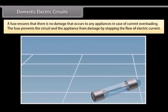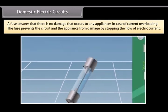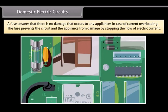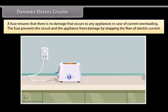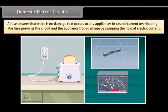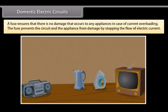A fuse is an important part of all circuits. It ensures that there is no damage that occurs to any appliances in case of current overloading. Overloading occurs when the live wire and the neutral wire come in contact with each other or there is a rise in the supply voltage. In this case, the fuse prevents the circuit and the appliance from damage by stopping the flow of electric current.